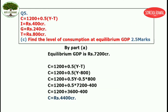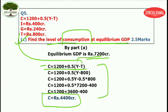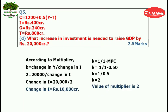Moving further to part C. Part C is very easy — simply find the level of consumption at equilibrium GDP. In part A we found equilibrium GDP as 7200 crores. Simply put this Y value and the tax value given in the question into the consumption function. The answer comes out as 4400 crores. Students, solve this yourself and verify your answer is 4400 crores.